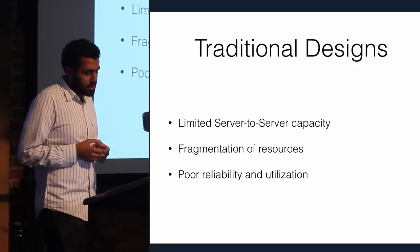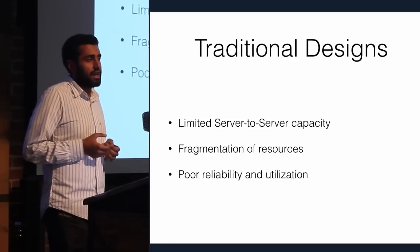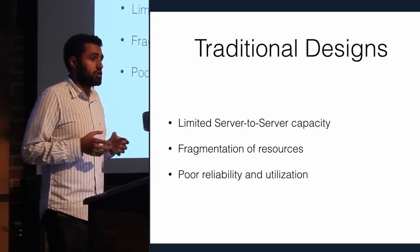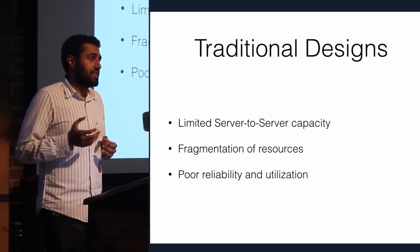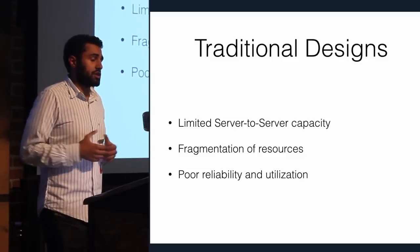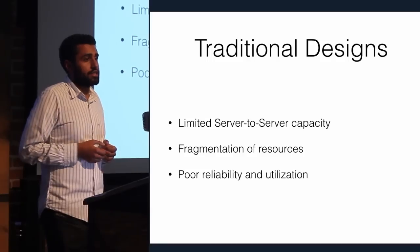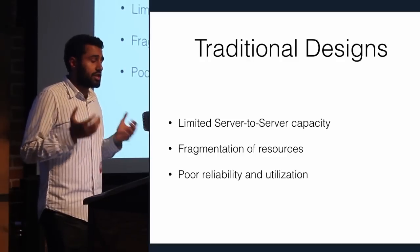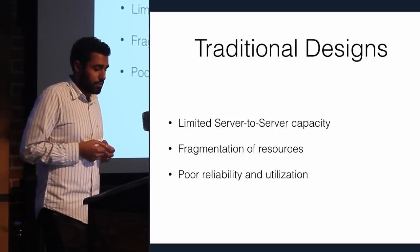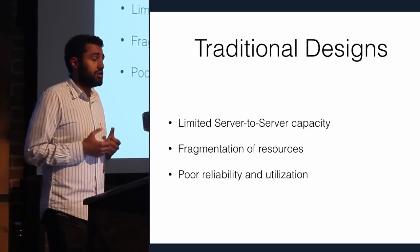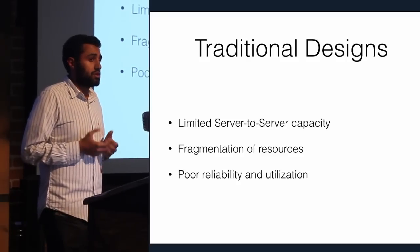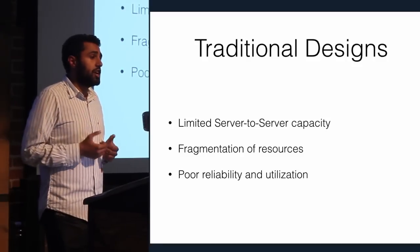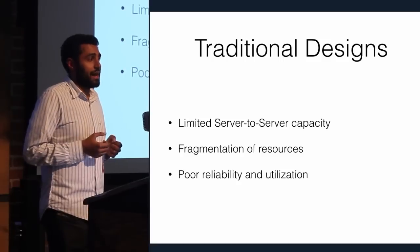Traditional designs have limited server-to-server capacity. As you go higher in layers of a fat tree, those devices have to get larger and larger, becoming very expensive quickly. There was often segregation of layer two networks — a CACM article by Bayless and Kingsbury referenced how layer two networks were considered failure domains, and by sharding those domains the network became significantly more reliable. Additionally, because networks must be reduced to a minimum spanning tree, if you have N+1 redundancy you'll realistically only be able to use 50% of capacity or less in a production network.